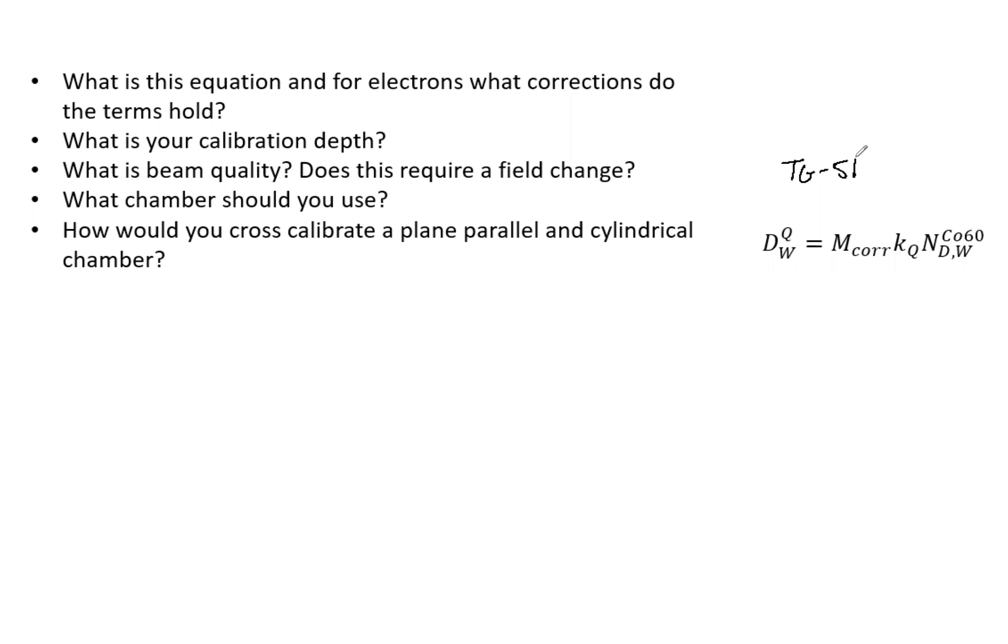And we have correction factors to account for this. Let's break this down. The M corrected is the raw reading, typically in nanocoulombs. You then have your P-elect, the electrometer correction factor. You have your P-ion, the ion recombination. You have P-pole, the polarity correction. P-TP, the temperature and pressure correction.